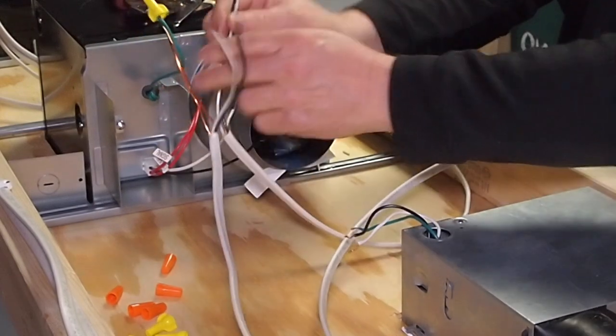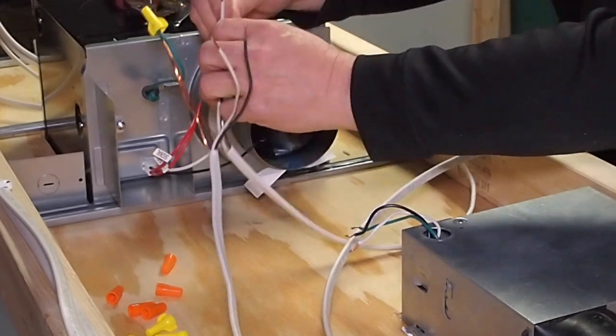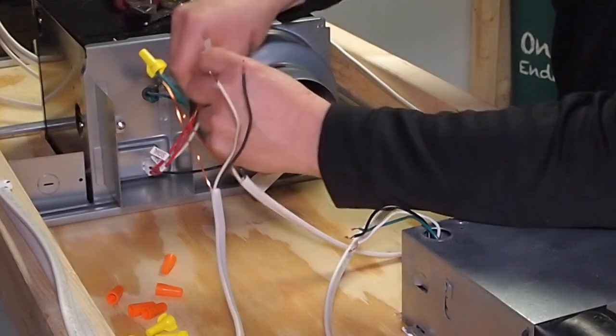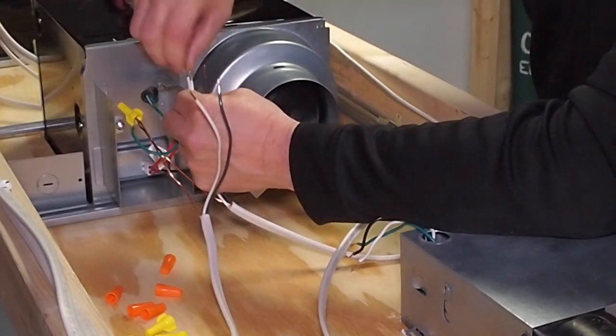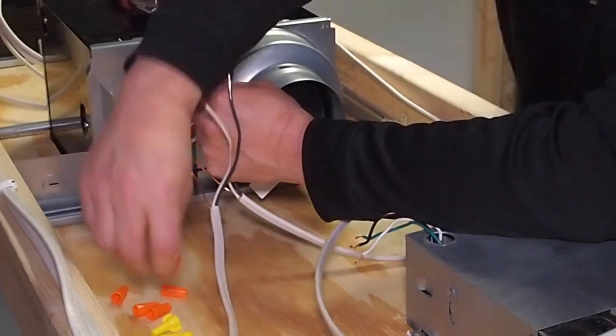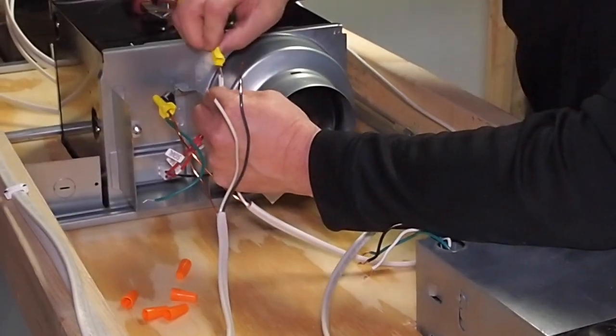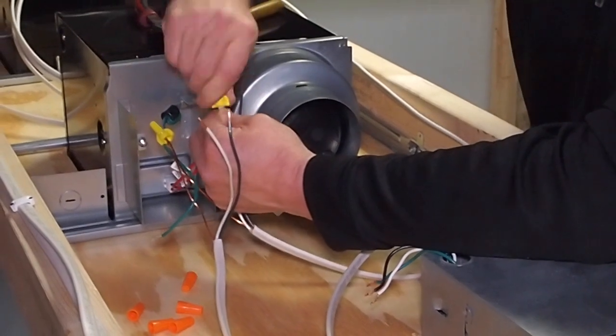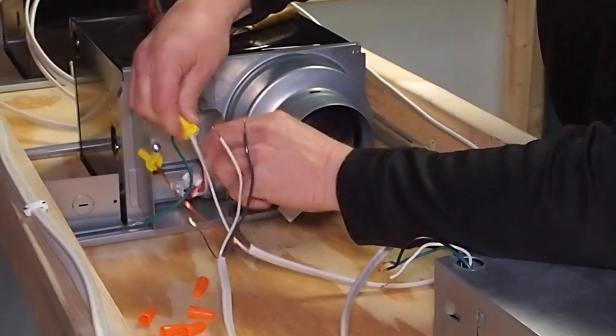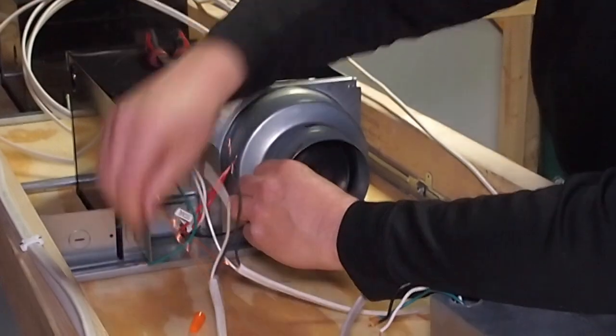Separate these here. So this pair here, this neutral and common is the constant power for this fan. Coming from our junction point. There is the neutral. Here is the common.